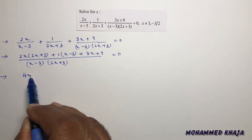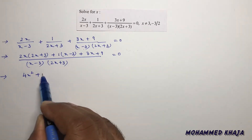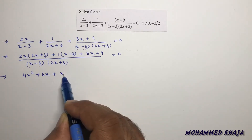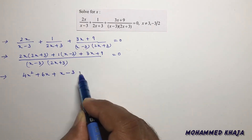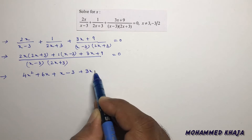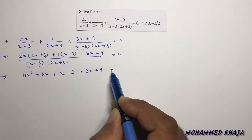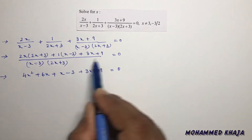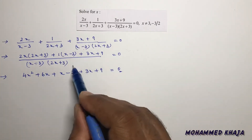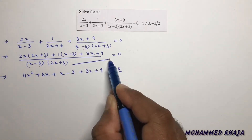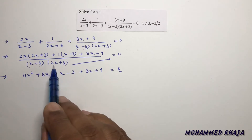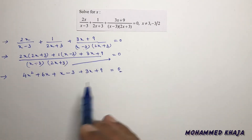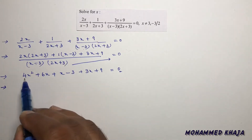Now expanding: 2x times 2x gives 4x², 2x times 3 gives 6x. Then 1 times x gives x, and 1 times (-3) gives -3. Plus 3x + 9 equals 0, since the right-hand side with (x-3)(2x+3) times 0 gives 0.